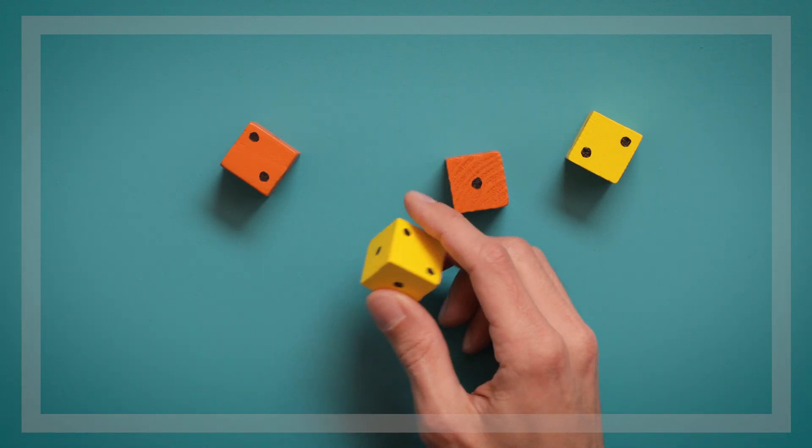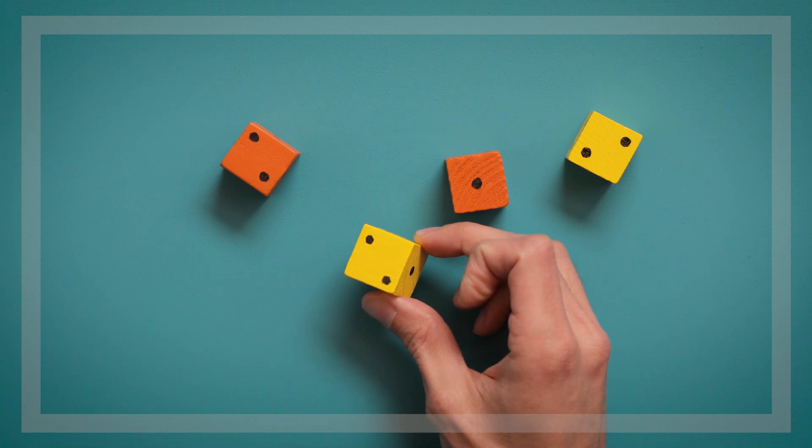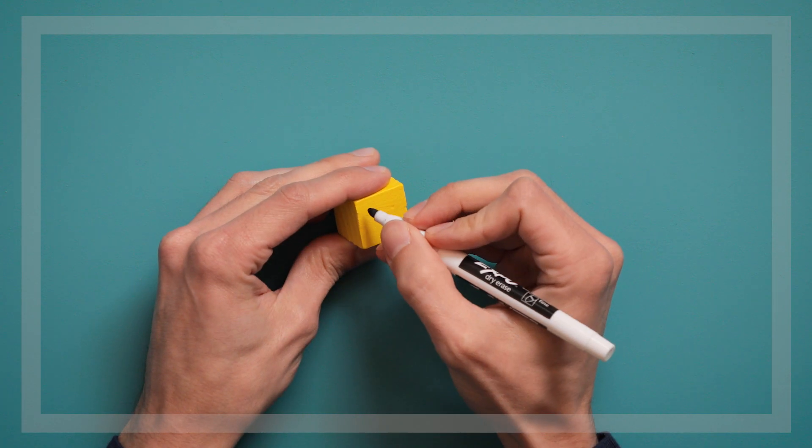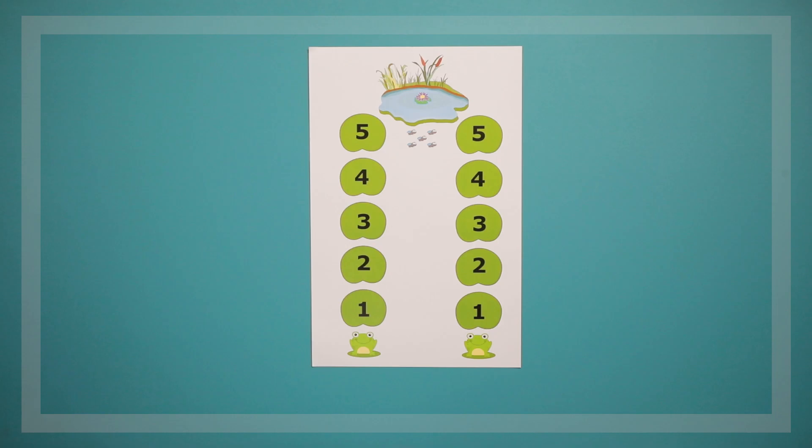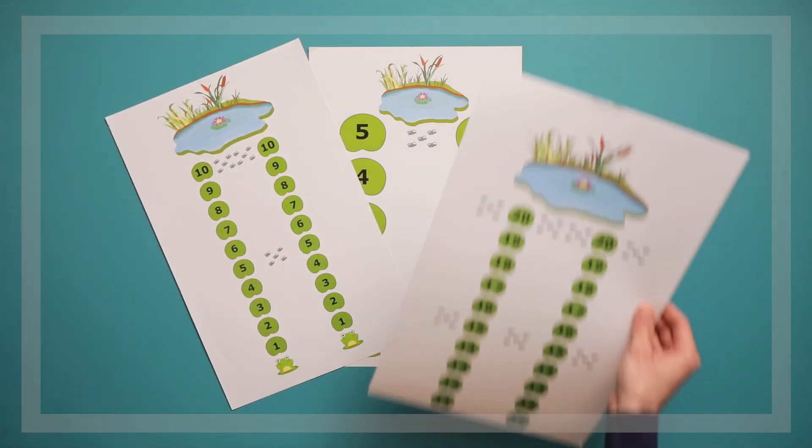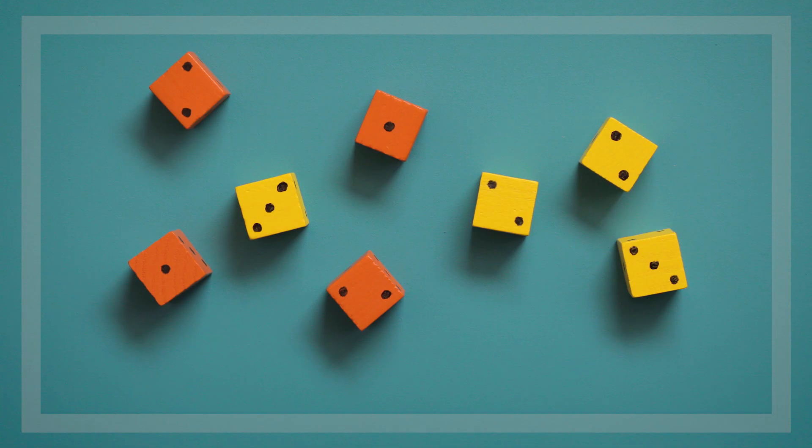We're going to start out with a die that has only one and two dots on it. You can make this type of die yourself by drawing dots on a cube. Eventually, we can play this game with higher number game boards and dice that have more dots on them.